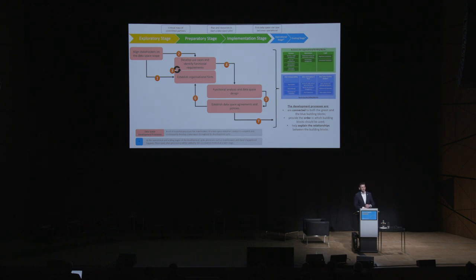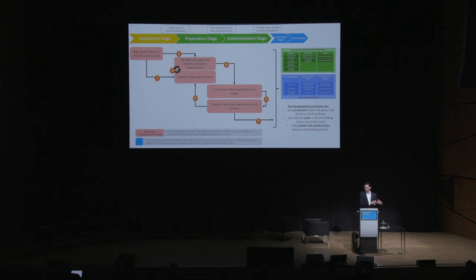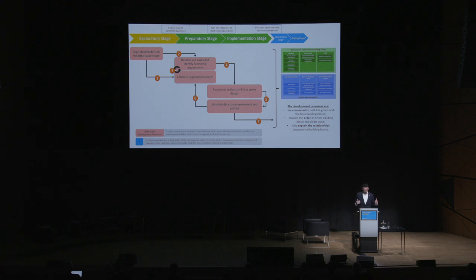One more important thing before we get to what the different processes actually do: we've connected all of these processes to the building blocks. So each of the building blocks is mapped on one of these processes — some on multiple — and in that way you're actually helped to get from one end of the document to the other. It also allows you to explain what the relationships are between the different building blocks. So let's start at the top left: aligning stakeholders within the data space and the data space scope. We've already discussed this over the last couple of days. The strategy and the purpose of a data space is the main focus point for us.